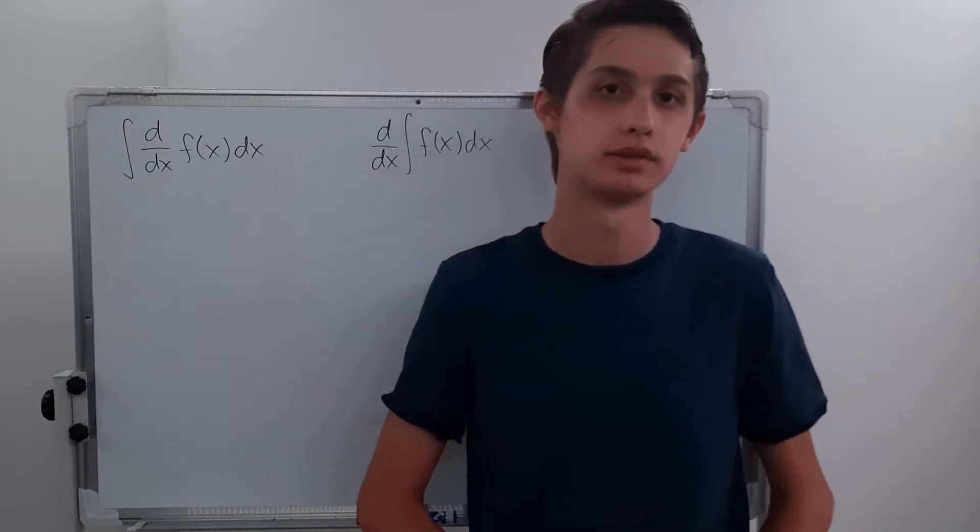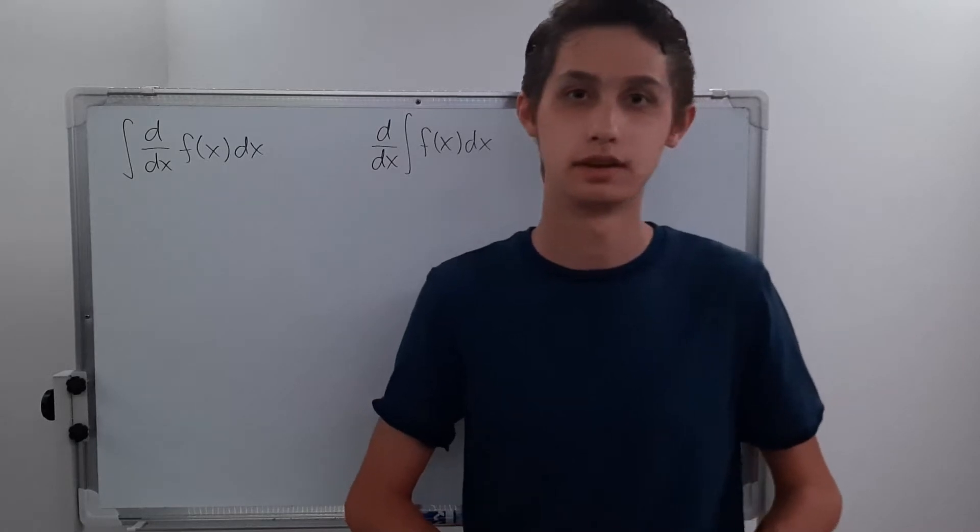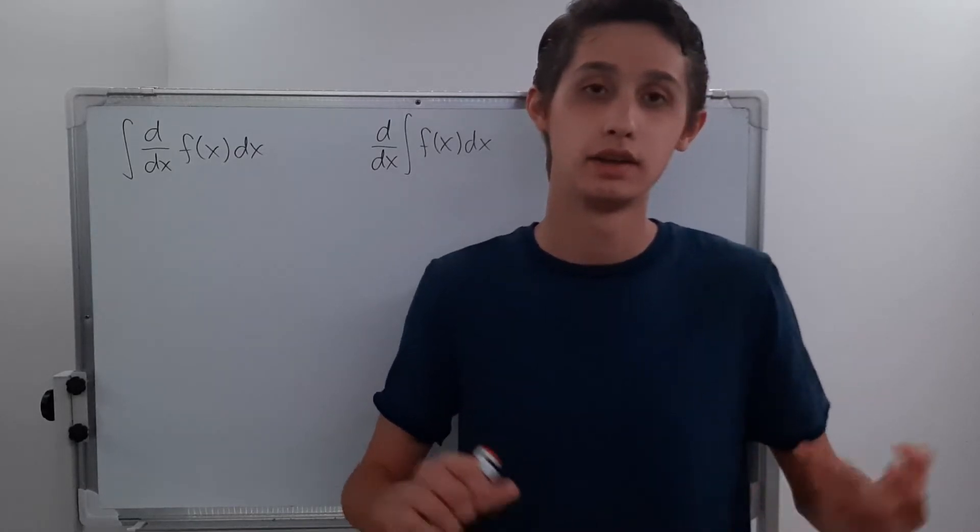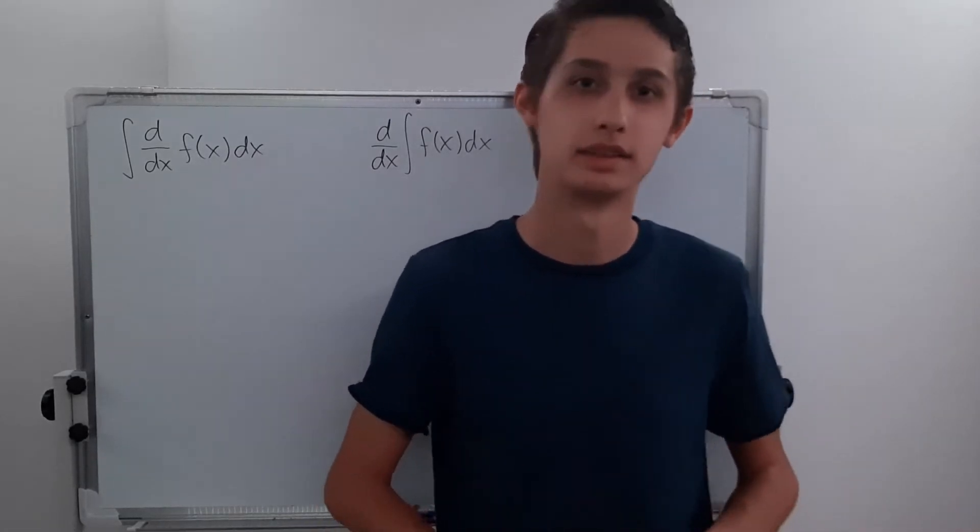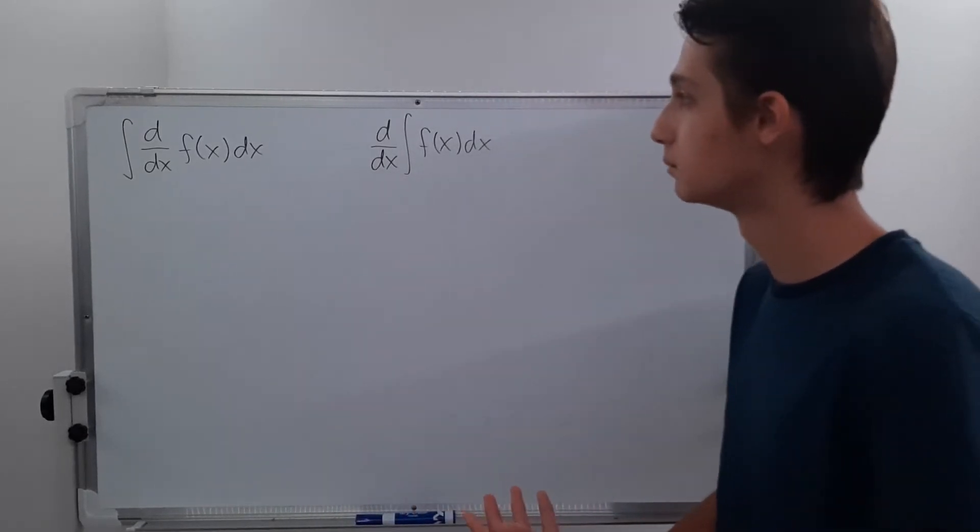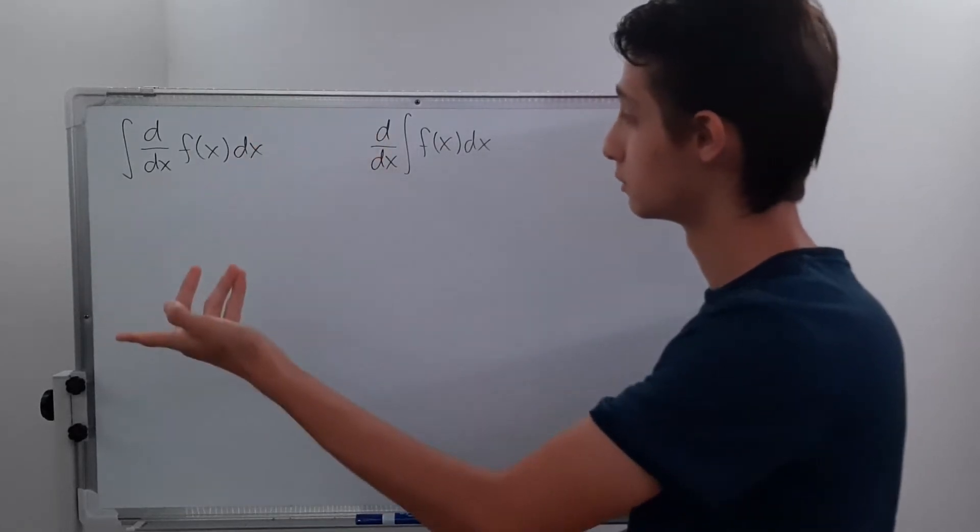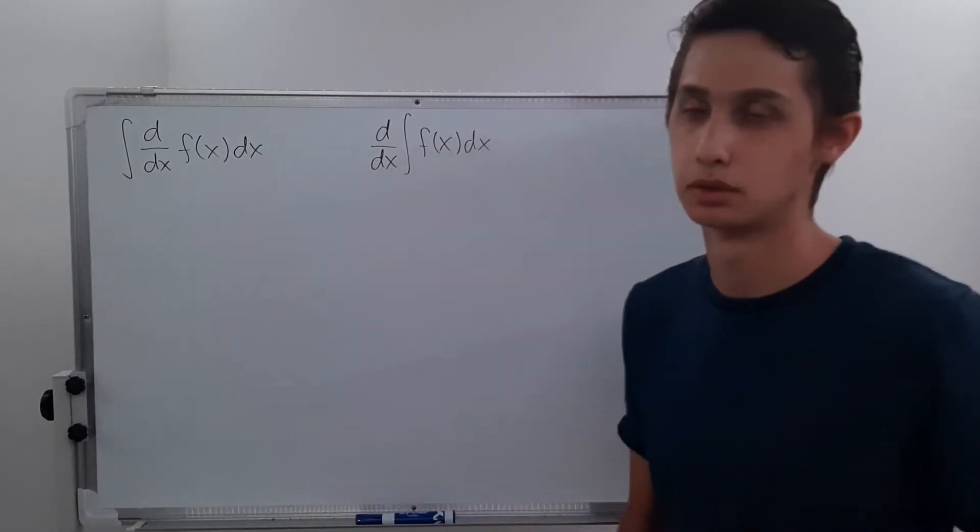So the fundamental theorem of calculus basically tells us that derivatives and integrals are inverses of each other. So how can we apply this to these two problems here? They look pretty much the same, but the derivative and integral symbols are flipped. So what's going to be the answer to both of these?